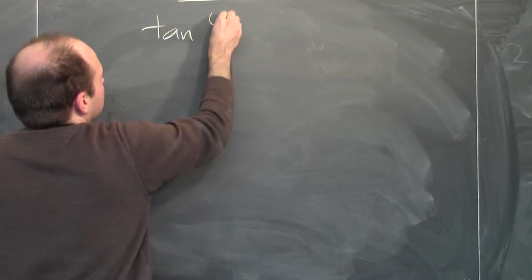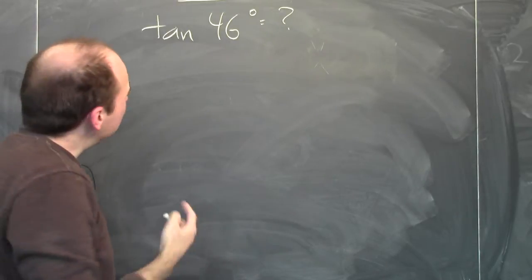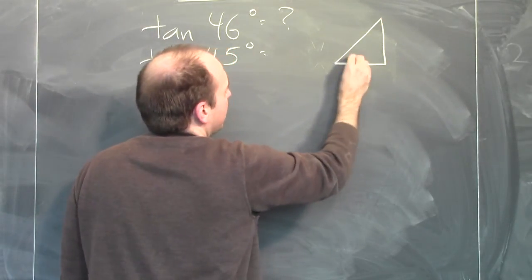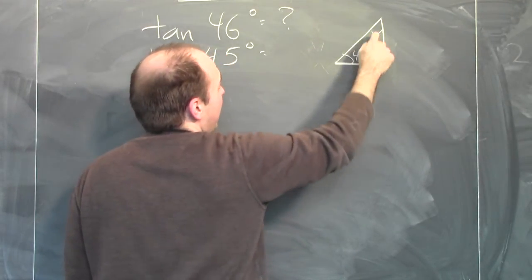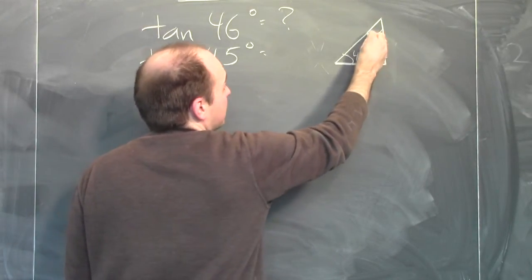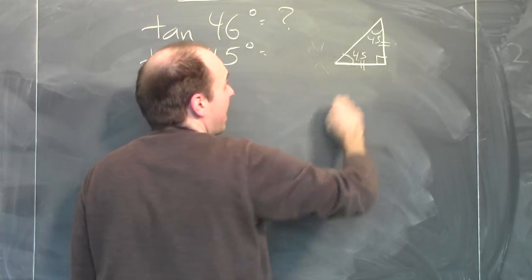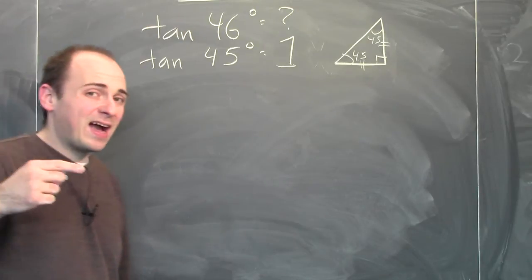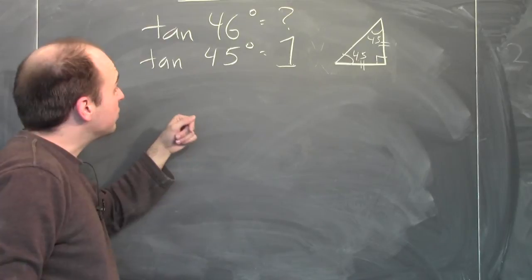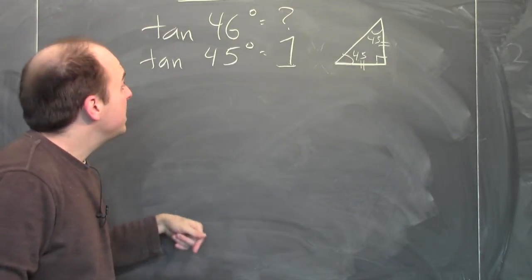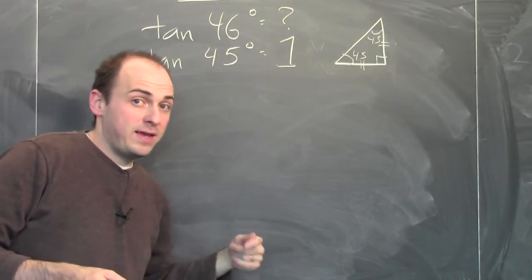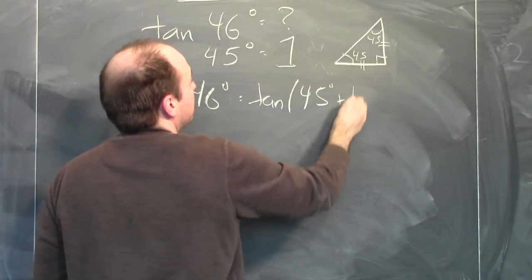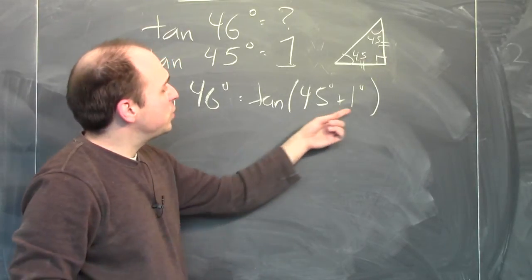Let's do a numerical example: approximate the value of tangent of 46 degrees. We know the tangent of 45 degrees exactly. For a 45-degree right triangle, the angles add up to 180 degrees, so the other acute angle is also 45 — making it isosceles, so the two legs are equal. The tangent is the ratio of those equal sides, so it's one. Now, tangent of 46 degrees equals tangent of 45 plus 1 degree — I'm perturbing the input — and the derivative tells me how that wiggle affects the output.